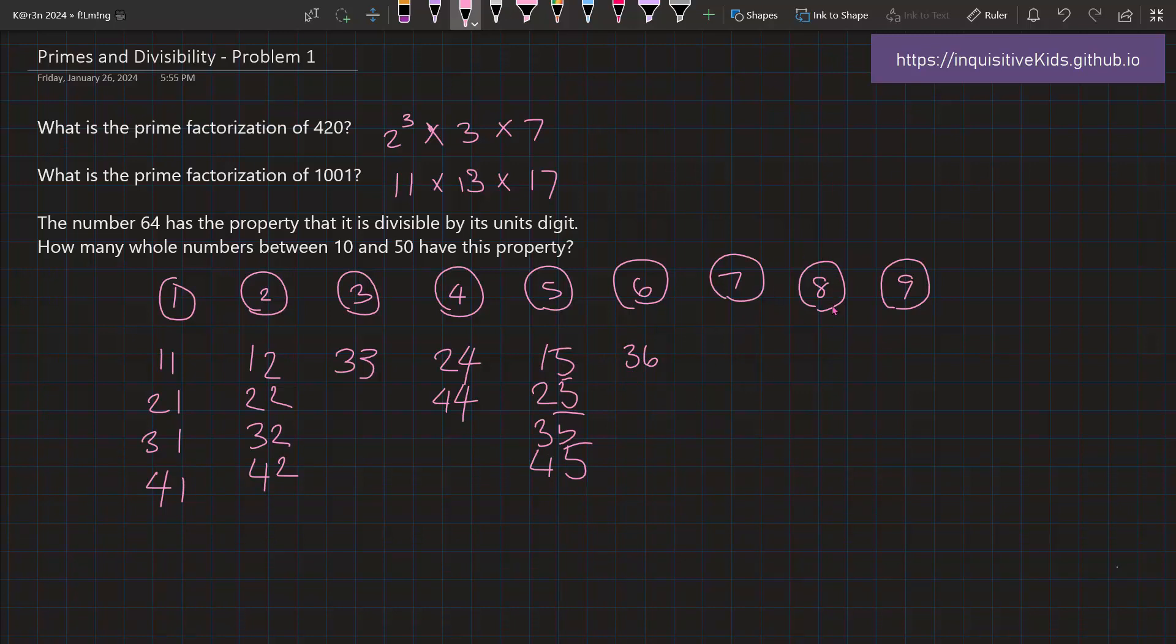And out of 18, 28, 38, and 48, only 48 is divisible by 8. And none of the numbers that end in 9 is divisible by 9 either.